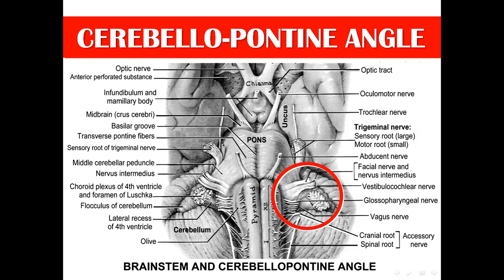Looking again at these features: this is the basilar groove, these are the transverse pontine fibers, abducent nerve, trigeminal nerve. This is the midbrain, and this is the oculomotor nerve coming out from the interpeduncular fossa.